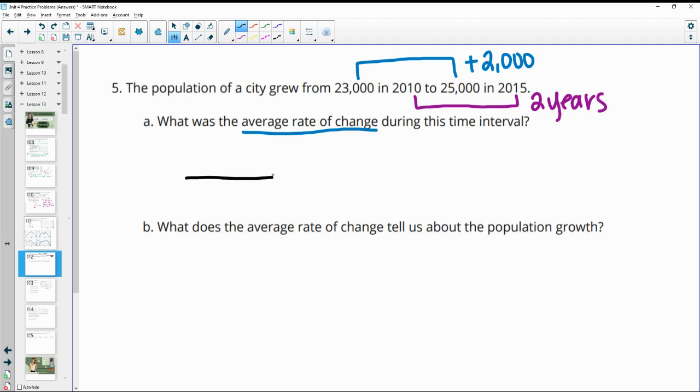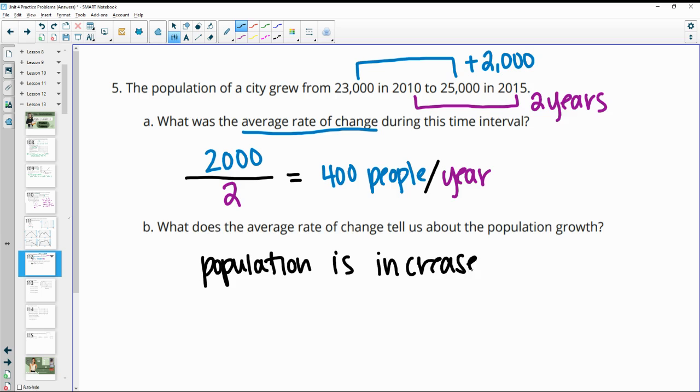So we want to take and divide those. So we want to do 2,000 divided by the time period of two years gives us an average rate of change of 400 people per year. So per one year. And then what does this tell us? It tells us that the population is increasing 400 people per year average in that time period.